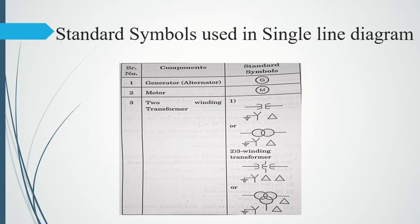All four of these parameters are distributed over the entire length of the transmission line. It's not like different values exist at different points — all four parameters are uniformly distributed over the entire length of the transmission line.